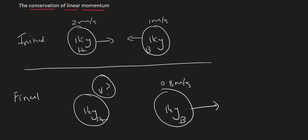We know from grade 12 maths in series and sequences that the sum symbol looks like this. So what we can say is that the sum — meaning the total — of all the momentum of the system initially must be equal to the sum of all the momentum finally.